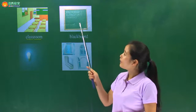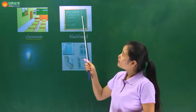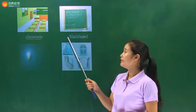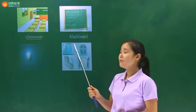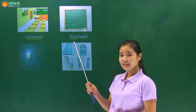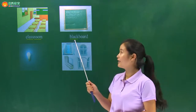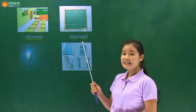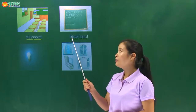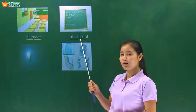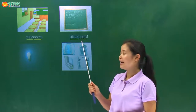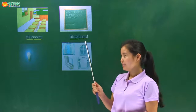Next one，look at this picture，这幅图画里面有一块黑板，blackboard. 同样的，我们学过：black，黑色的；board，板子。Blackboard，黑色的板子，就是老师写字的黑板。